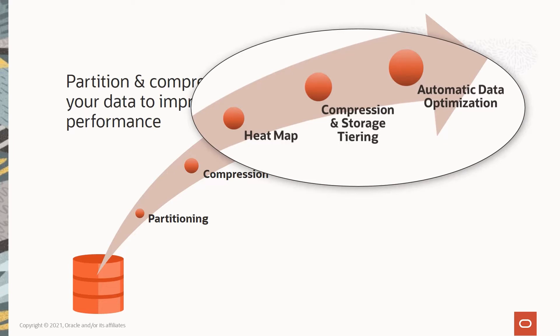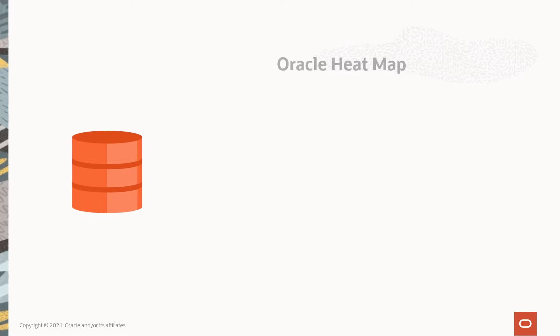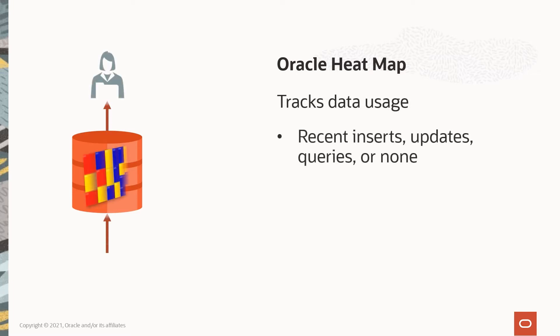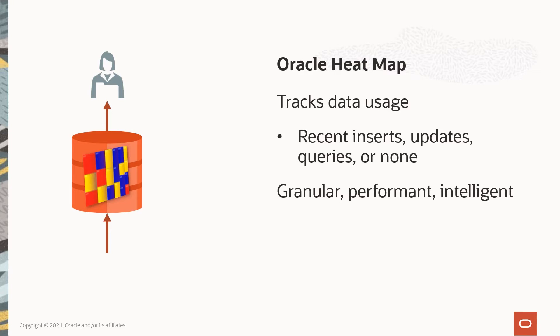Let's begin with the Oracle database's heatmap function, which tags our data with additional information that tells us when it was last inserted or updated, and when it was last queried. Since heatmap is built into the database, it's far more granular, performant, and intelligent than storage-based functionality, which only sees bits and bytes.